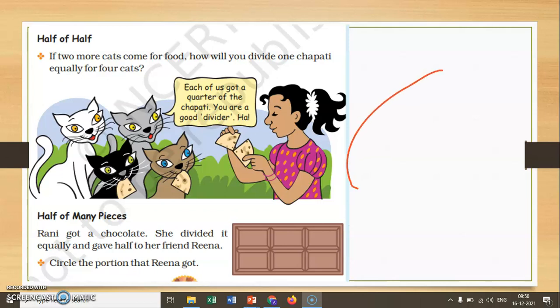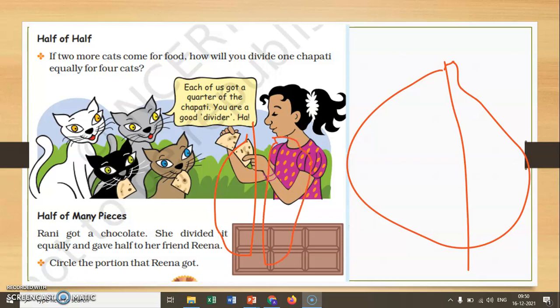For example, if this is the chapati, what are its two parts? This is one part and this is the other part.